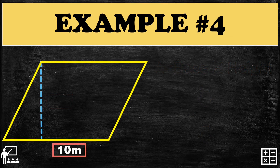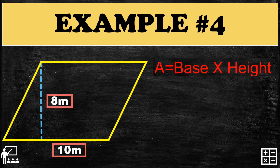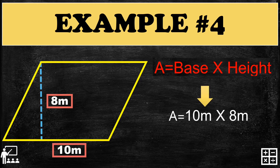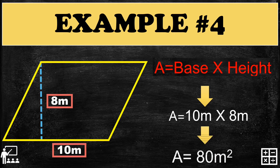Next example: a parallelogram with a base of 10 meters and a height of 8 meters. Using the formula base times height and substituting the measurements — can you guess what the area is? Very good! It is 80 meters squared.